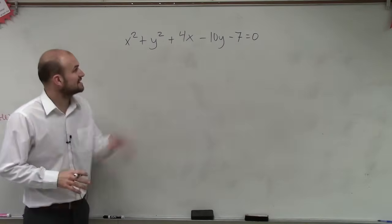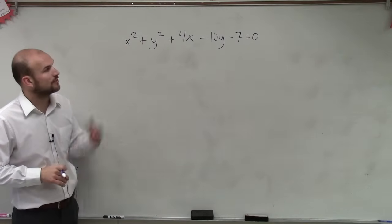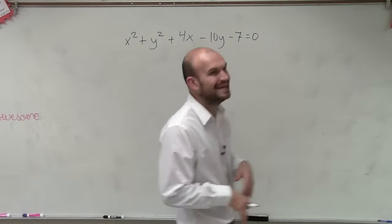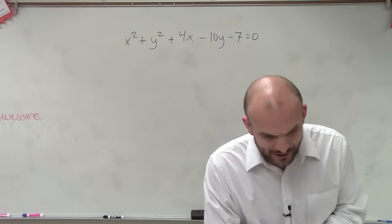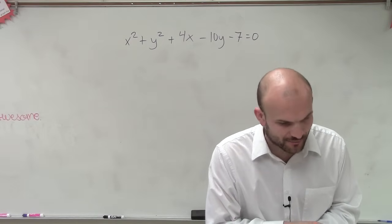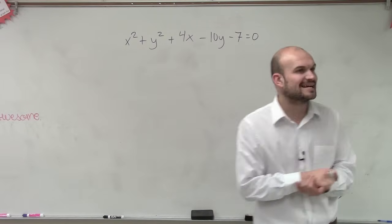So ladies and gentlemen, what we have in this case is x squared plus y squared plus 4x minus 10y minus 7 equals 0. And what they're asking us to do is find the center and the radius of the circle and then sketch the graph.